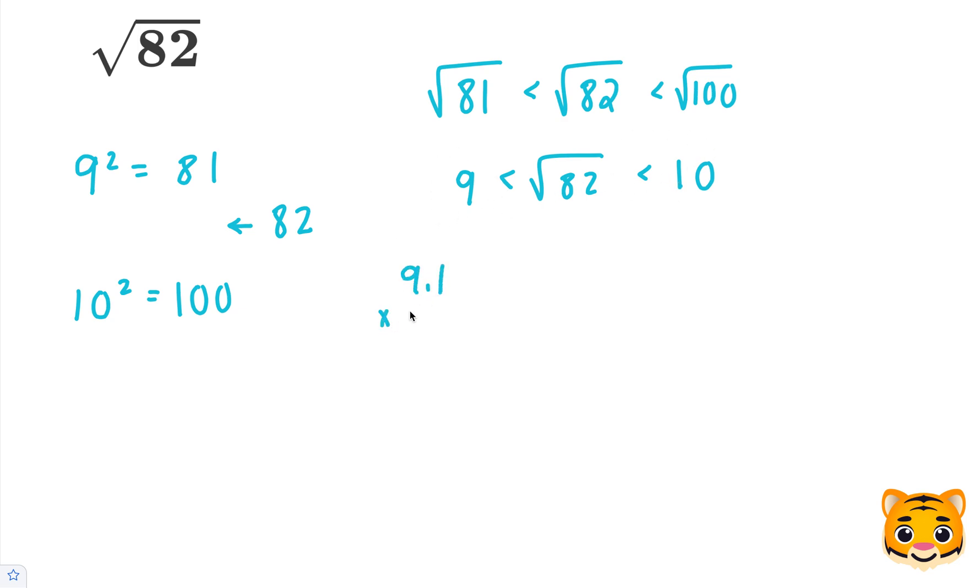We can try out 9.1 times 9.1 to see how close that gives us to 82. 1 times 1 is 1, 9 times 1 is 9. We'll add our 0 and do 9 times 1 is 9, and then 9 times 9 is 81. When we add these together, we end up getting 82.81.